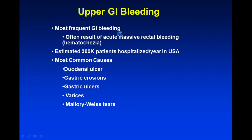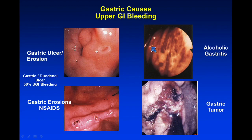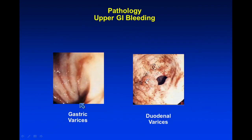Upper GI bleeding is the most frequent cause of GI bleeding, with a lot of patients hospitalized. These are the causes from a recent review. Most of the bleeding we're going to see in upper GI bleeding is from gastric or duodenal ulcers. A lot of the guidelines say you don't do nuclear medicine for upper GI bleeding — I don't think that's true, particularly when we get into CINE technique. Varices are another cause — you can often see varices on a red cell study, and they can be very prominent.